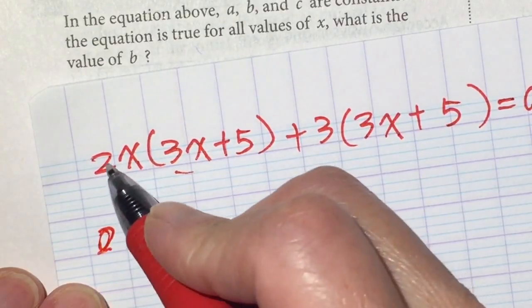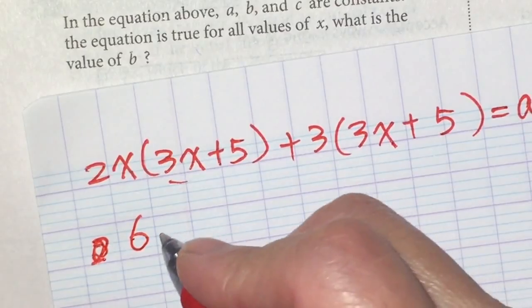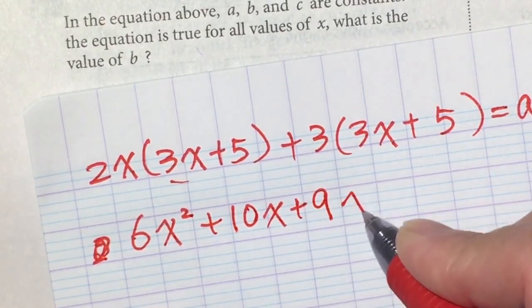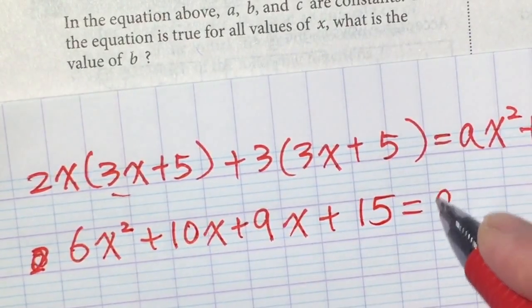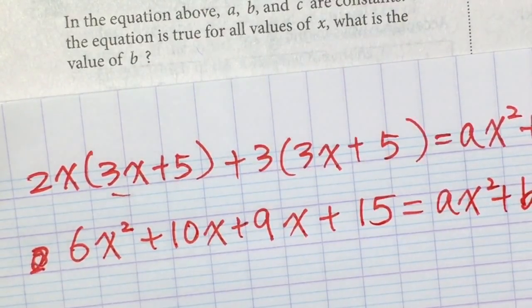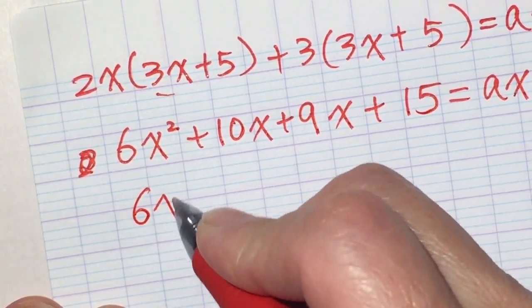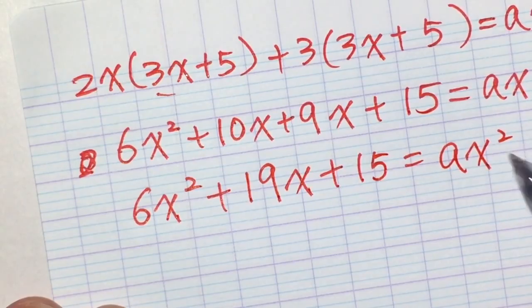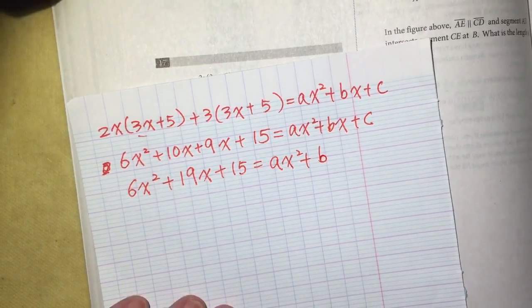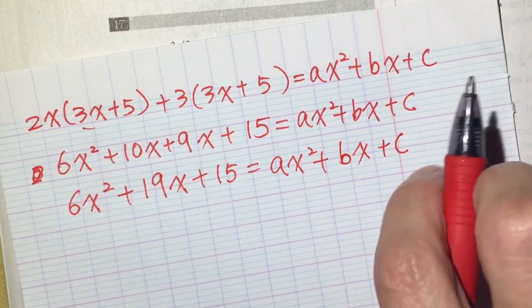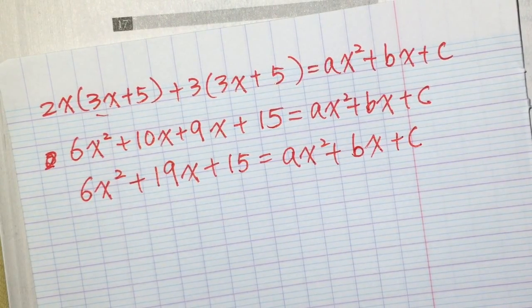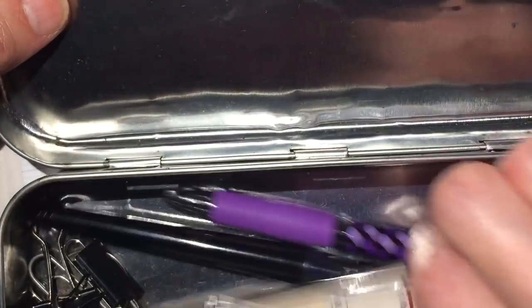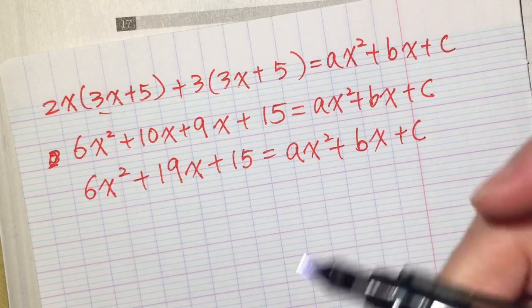So 2 times 3 is 6x squared plus 10x plus 9x plus 15 equal ax squared plus bx plus c. Maybe it's not good to use red pen to write it. Okay. I will change pen. I am sorry. If I offend anybody. I didn't mean that.